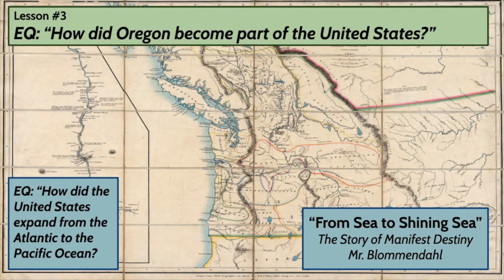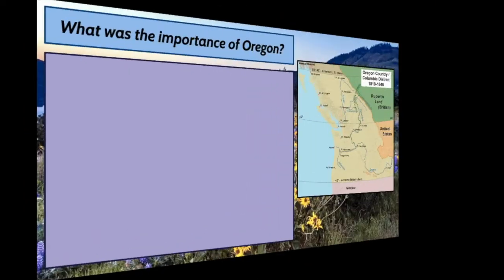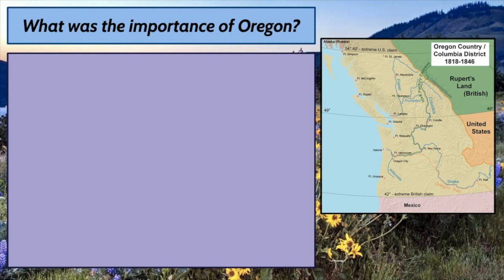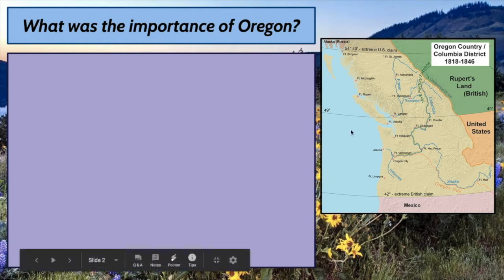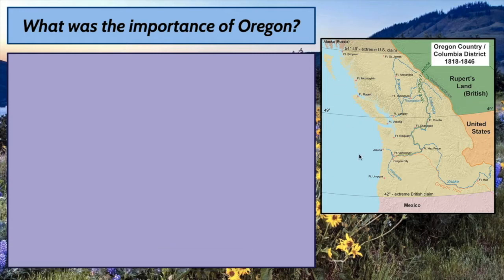I'll give you a moment to write that essential question in your interactive notebook. Our first left side question today will be: what was the importance of Oregon? The Oregon we are talking about here is not just what we now know as the state of Oregon, but what was then known as Oregon Country or Oregon Territory. The area in question is represented on this map in the tan color — that entire area is what the U.S. considered Oregon at the time.